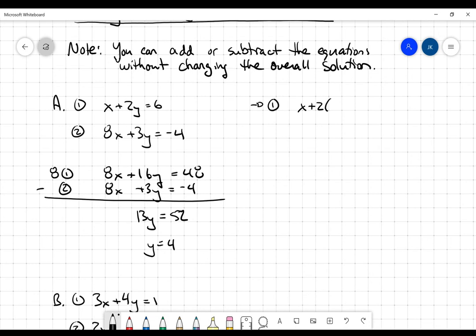So I'll get x plus 2 times 4 is going to equal 6. So x plus 8 is equal to 6. And I'll bring that 8 over, and I'll get negative 2. So I'm thinking that the solution here is going to be the point negative 2 comma 4.